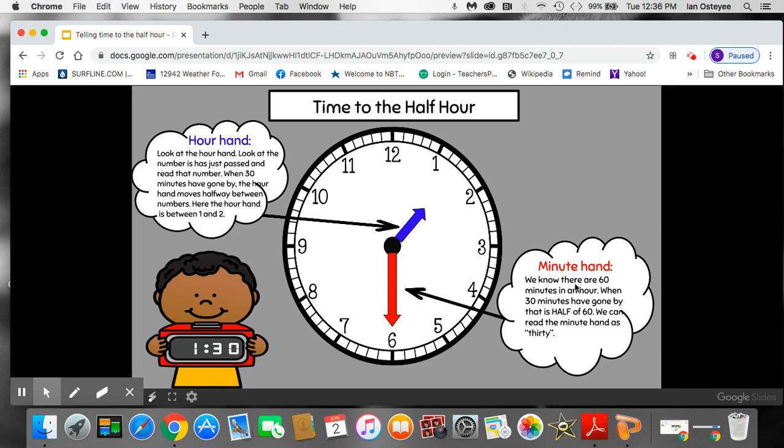Minute hand. We know there are 60 minutes in an hour. When 30 minutes have gone by that is half of 60. We can read the minute hand as 30 and here's why. If I start up at 12 and I count by 5 each time I hit a new number that means 5 minutes have gone by and when the minute hand is down, fell down, got dirty, we know we say 30. Here's what I'm talking about. 5, 10, 15, 20, 25, 30. Notice half of the hour of 1 is gone.